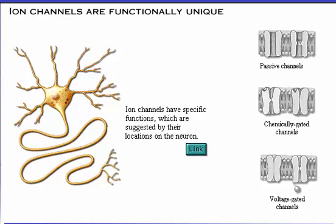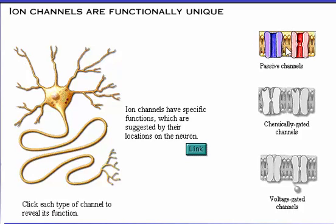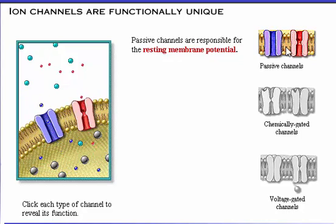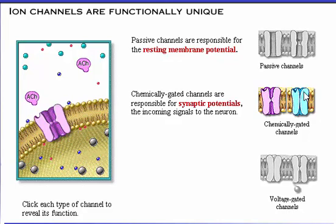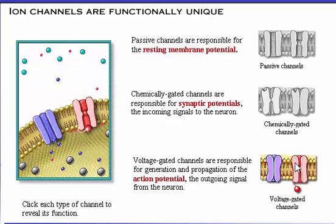Ion channels have specific functions which are suggested by their locations on the neuron. Passive channels are responsible for the resting membrane potential, which we will learn about in the next section of this module. Chemically gated channels are responsible for synaptic potentials, the incoming signals to the neuron, covered in a subsequent module. Voltage gated channels are responsible for generation and propagation of the action potential, the outgoing signal from the neuron, covered in the last section of this module.